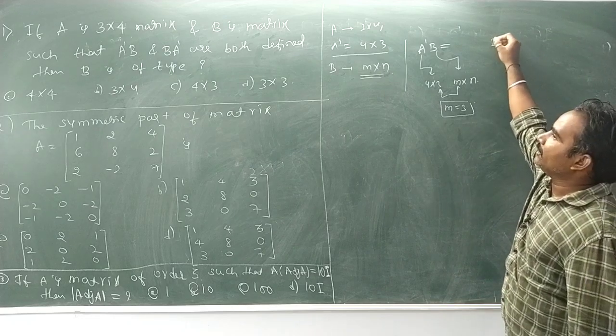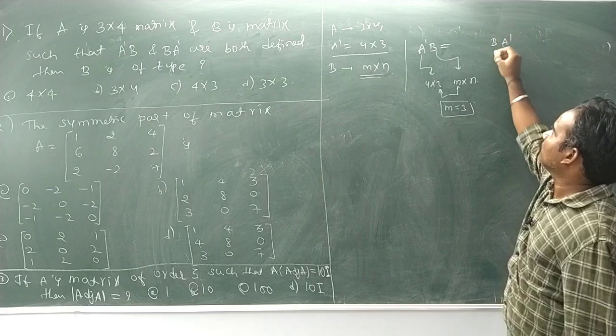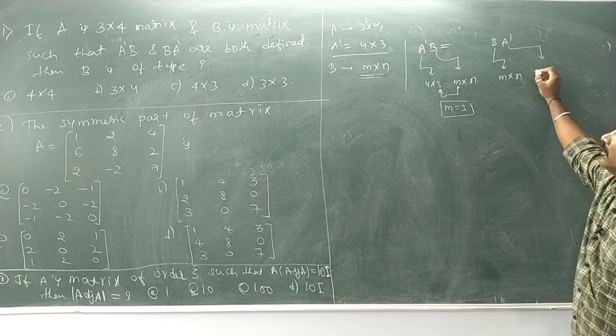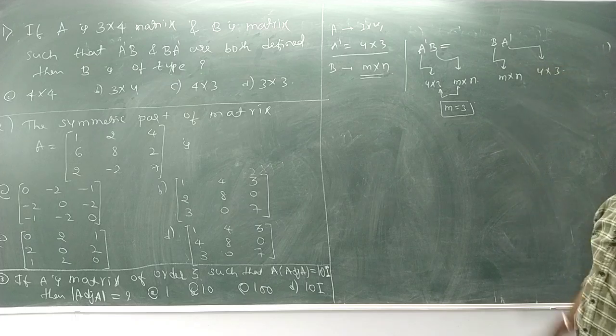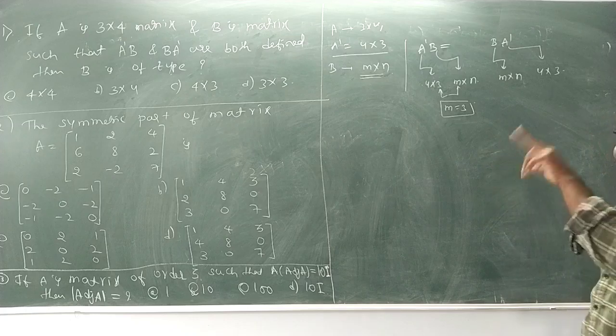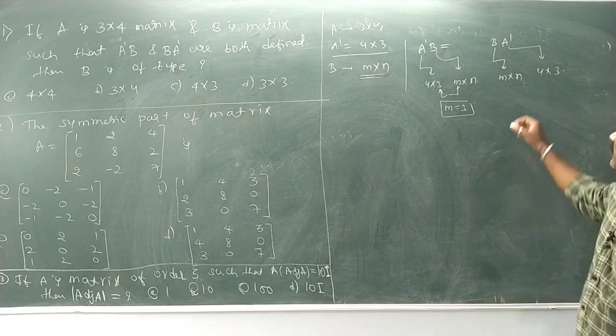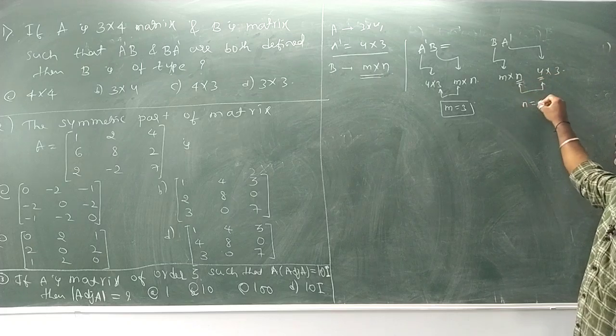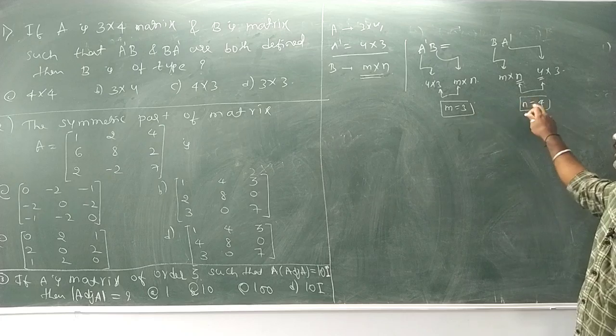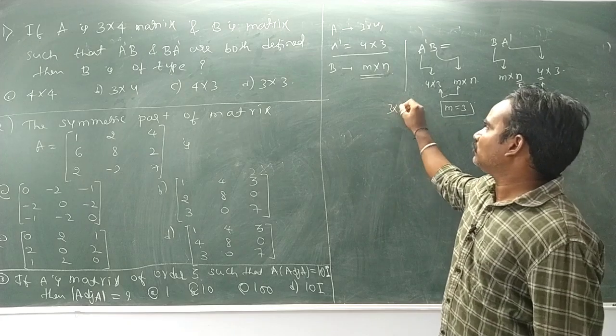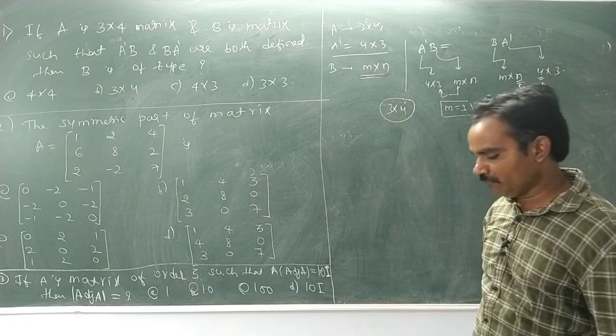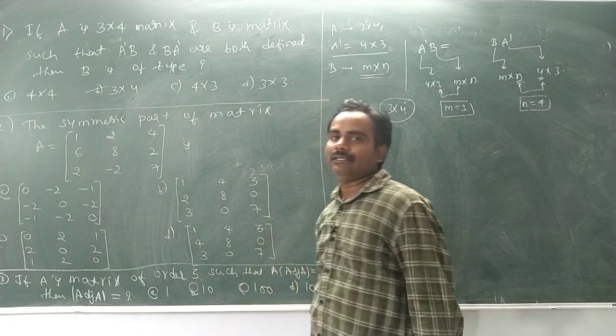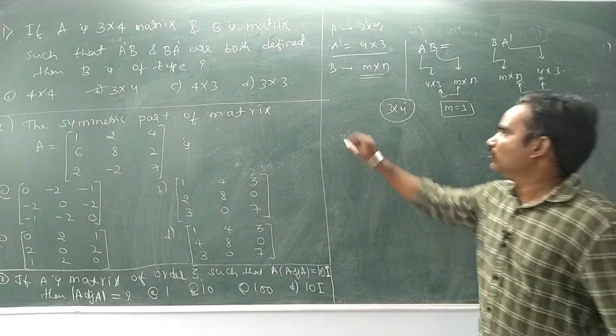Now for B'A: it's 3 by 4. So the order is 3 by 4, which means option B is correct. This is a simple problem.